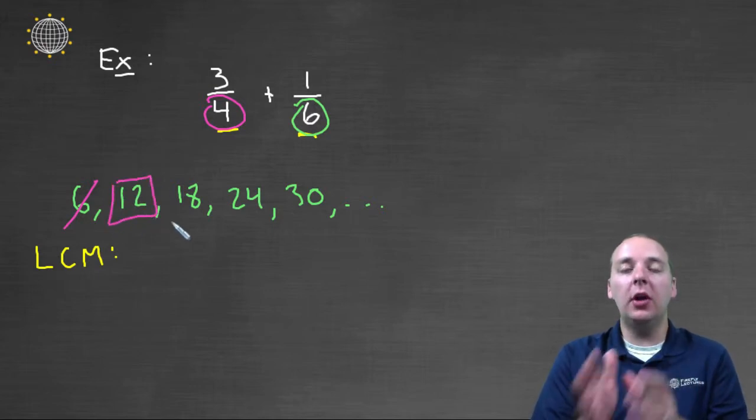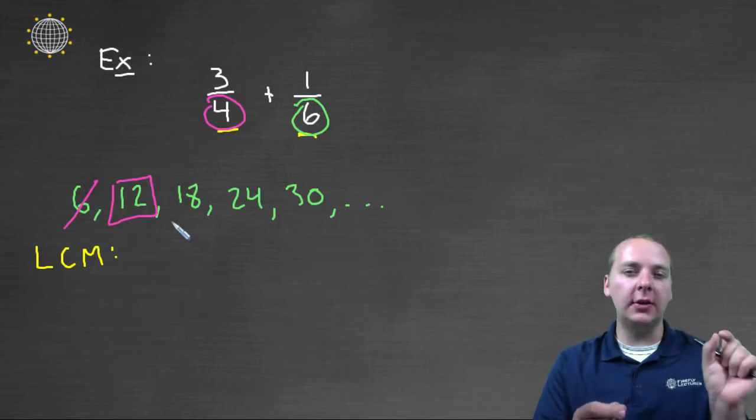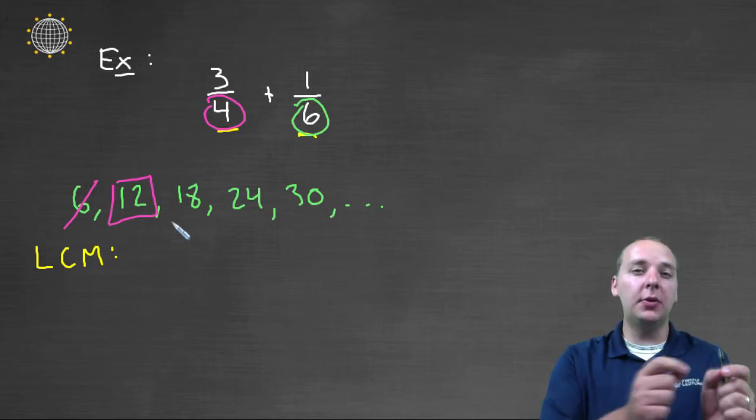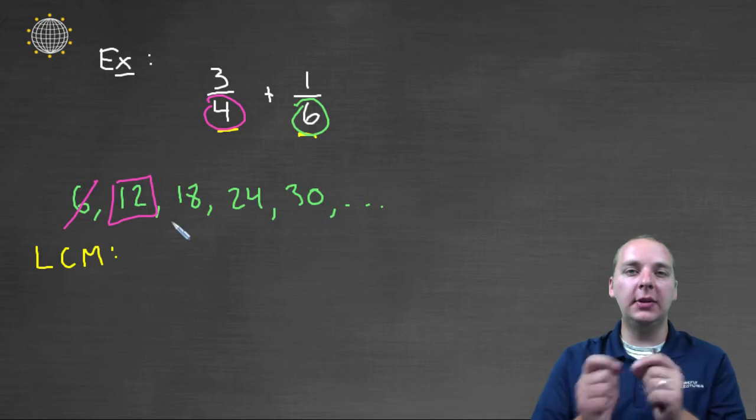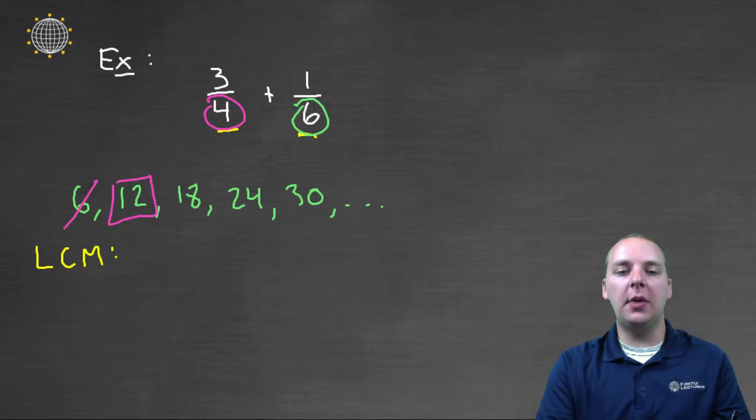But I'm going to start looking in this list, and I'm going to stop when I find somebody who is also a multiple of four. Six is not a multiple of four. But twelve is. Done. We found it. And so that's all you do. You start with the larger of the two numbers, and you keep taking larger and larger multiples of that with an eye on the smaller number.